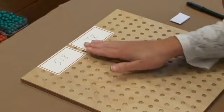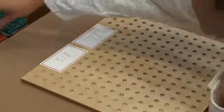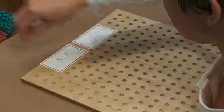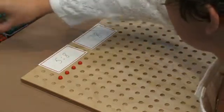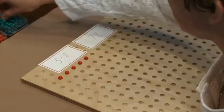So the first thing that we're going to do is set up our ratio. Our antecedent, we have 5, and our consequence, we have 8.